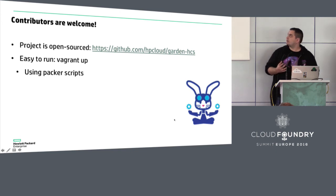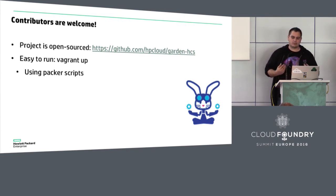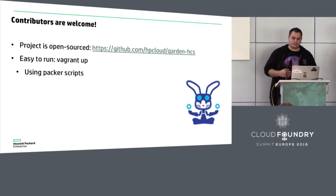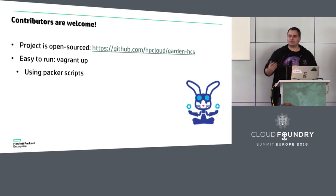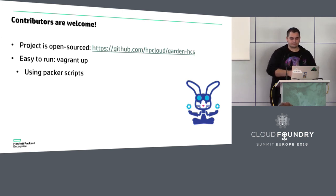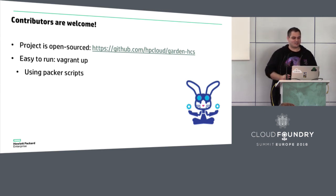Contributors are welcome — we're planning to open source all of this work. It's basically a backend implementation for Garden, so please keep an eye out for this. It's not difficult to stand up: you just use an existing Bosh Lite deployment, and there are Packer scripts available that allow you to create a Windows image for Vagrant. The project is not open sourced yet, but we're going to open source it.